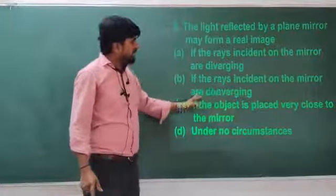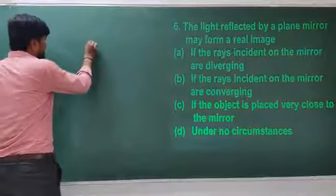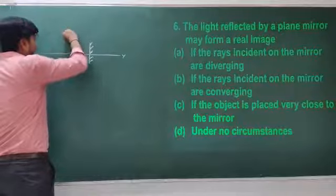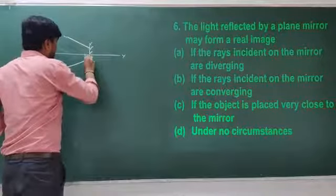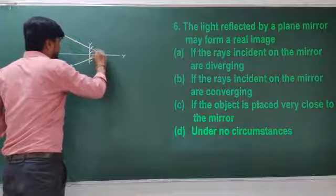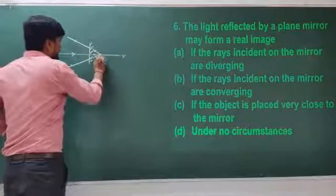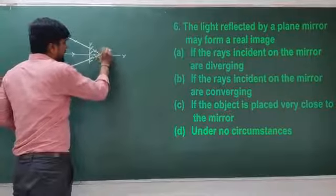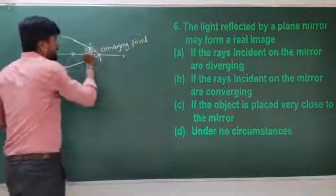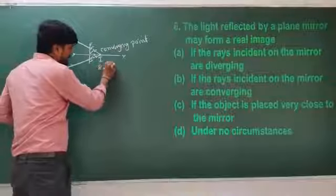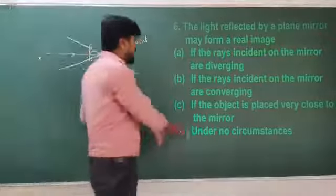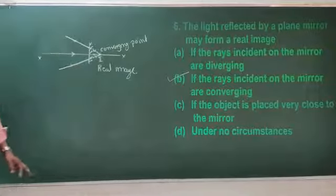If the rays incident on the mirror are converging, those light rays meet at a point. At that converging point we get the image, and it is a real image. So a real image is always formed at the converging point. The correct option is Option B — the rays incident on the mirror are converging.